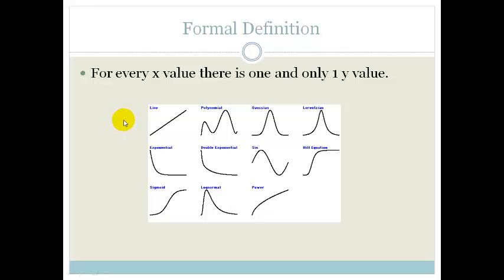Let's look at a couple of functions. The formal definition of a function is that for every x value there is one and only one y value. So if for example you're looking at a straight line, these are different types of functions: a polynomial, a Gaussian, a Lorentzian, exponential graph,